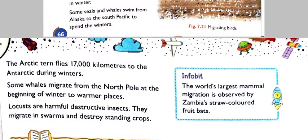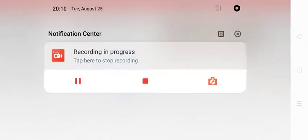Info bit: The world's largest mammal migration is observed in Zambia, where straw-colored fruit bats migrate. That concludes Chapter 7. Thank you.